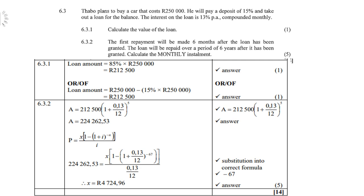For 6.3: Turbo plans to buy a car costing 250,000 Rand. He pays a 15% deposit and takes a loan for the balance. First, calculate the value of the loan. Since a 15% deposit was paid, 85% remains. So the loan is 85% × 250,000 = 212,500 Rand.